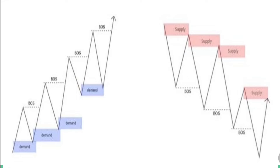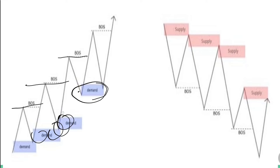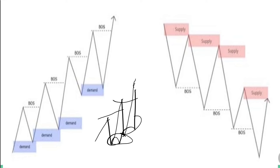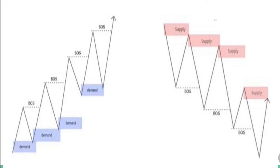Looking at a bullish market structure, demand and supply traders take trades at the mitigation of the bullish order block. You can see here: there's a break of structure, trade taken from here; break of structure, trade taken from here — and so on. These are demand zones within a bullish market structure. This zone here is a mitigation, and this one was also mitigated and traded.